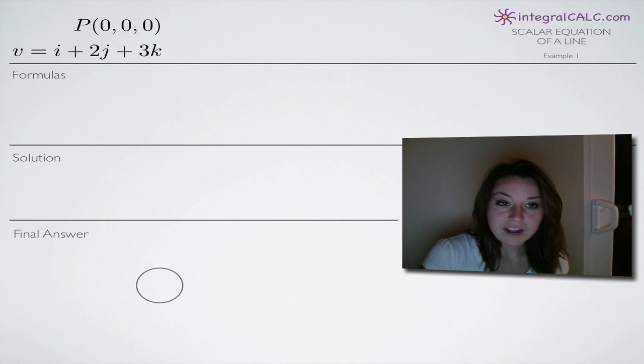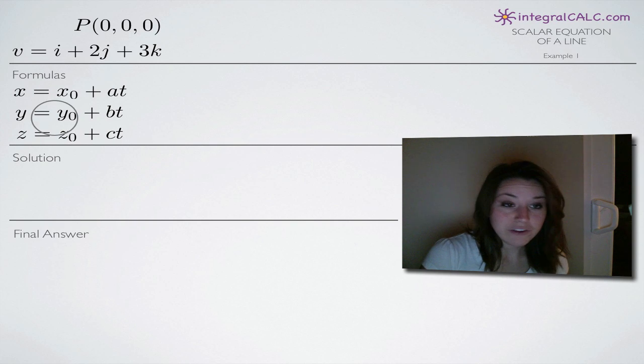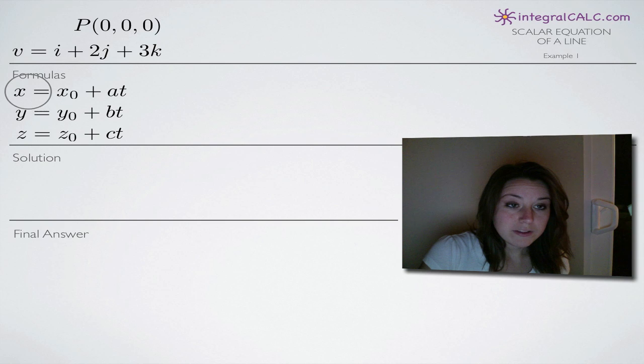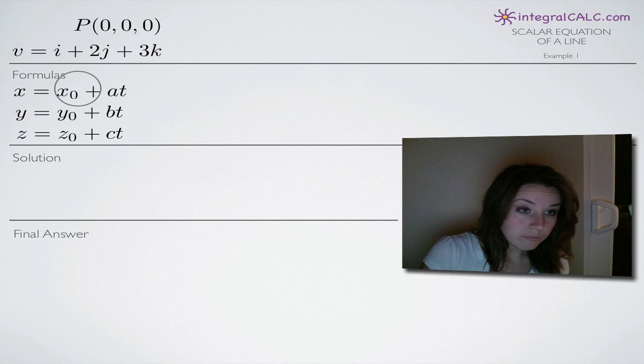So the simplest kind of scalar equation of a line problem you could be given. These problems are really easy as long as you have the right information. We're going to be using these three formulas to find x, y and z, the scalar equations of the line.